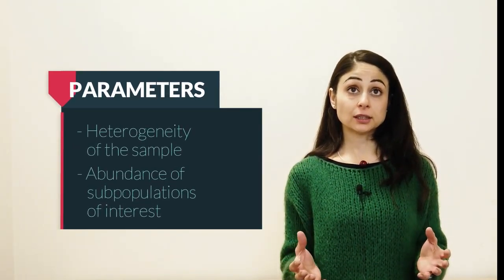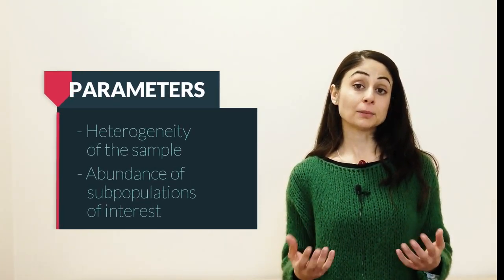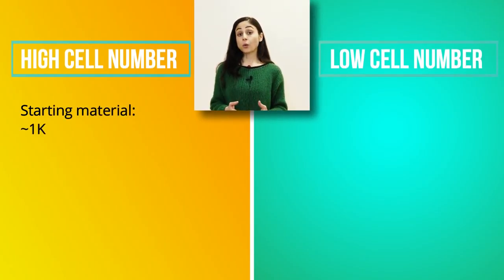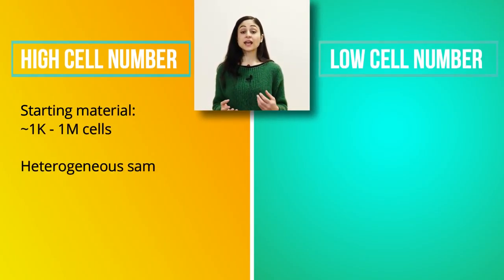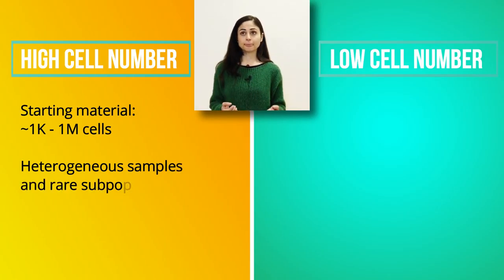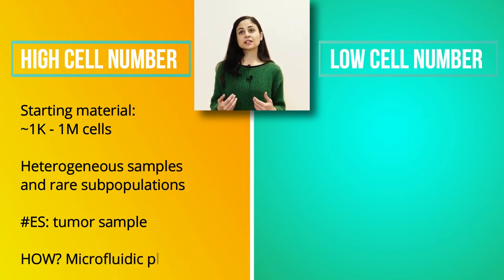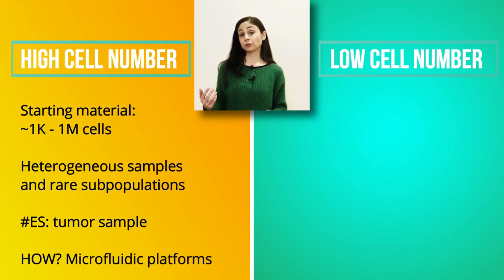According to the sample type and system complexity, we will define the number of cells to be analyzed in order to define the suitable platform for cell capture. One must consider the expected heterogeneity of the sample and the estimated abundance of the subpopulation of interest. A high cell number — for example, thousands or millions of cells — is required in case of highly heterogeneous samples and rare subpopulations, such as tumor samples or complex tissue. In this case, we should choose a high-throughput system, such as a microfluidic platform.